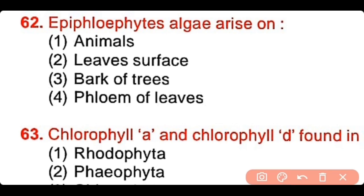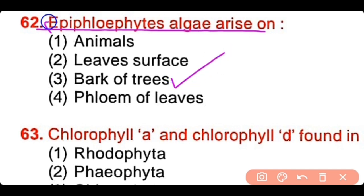Question number 62: Epiphiloeophytes algae arise on animals, leaf surface, bark of trees, or phloem of leaves? The correct answer is option 3. Epiphiloeophytes algae are algae that grow on the bark of trees.